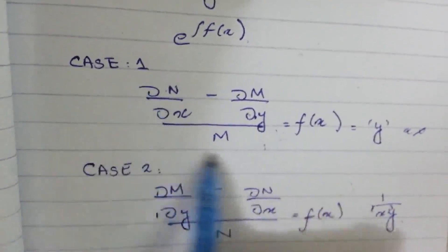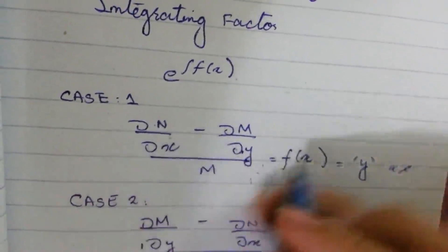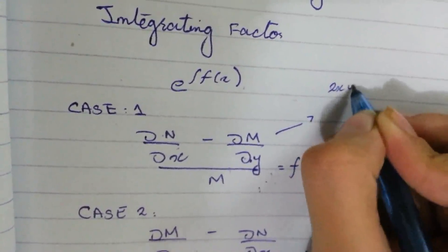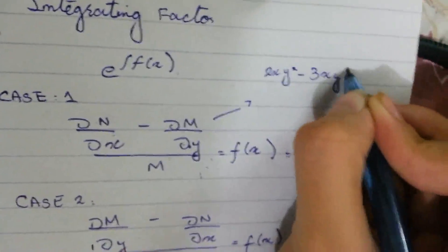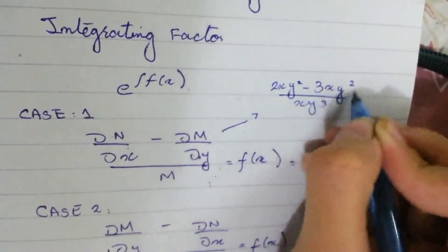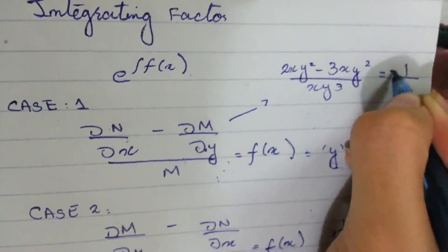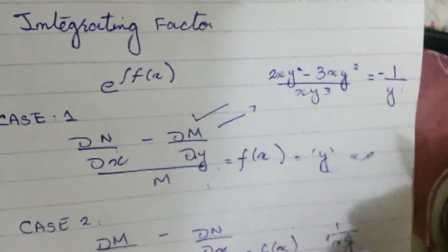Now I'll apply Case 1 to check if it's applicable. Substituting: (2xy² - 3xy²)/(xy³) = -1/y. The answer is only in terms of y, so this rule is applicable.